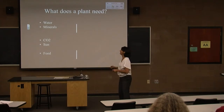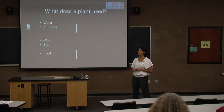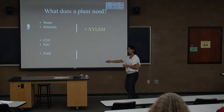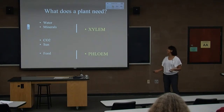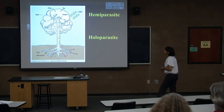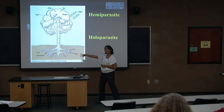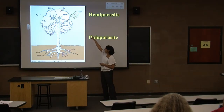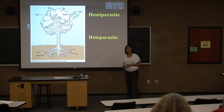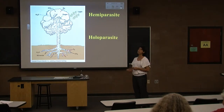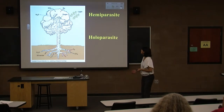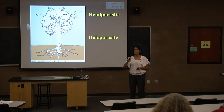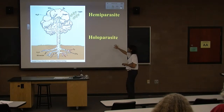The tissue that transports water and minerals is called xylem, and the one that transports food is called phloem. These are the two transport systems. The xylem moves water up from the roots; sugars made from carbon dioxide and light move through the phloem. Some parasitic plants only steal water — they still photosynthesize but steal water from their host. That's called a hemiparasite: it just taps into the xylem. Those that tap into both, stealing food and water, are called holoparasites.